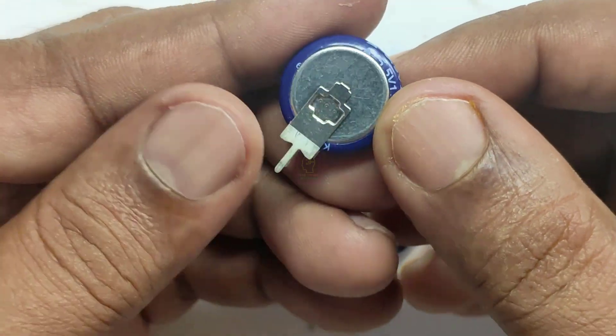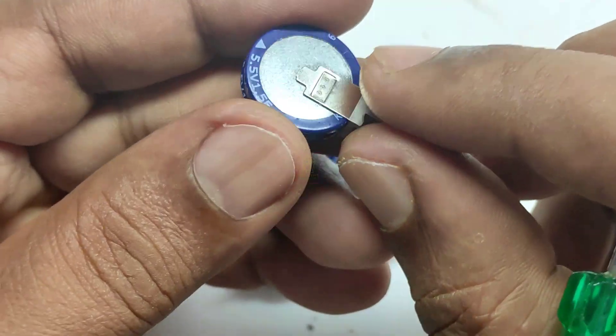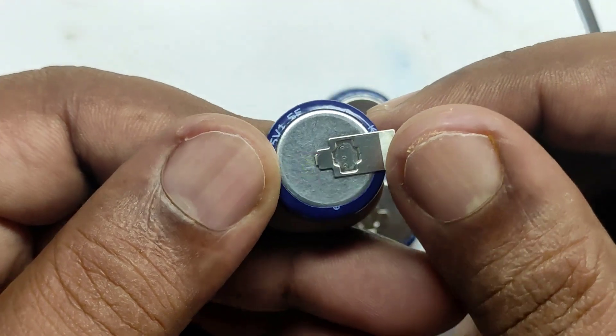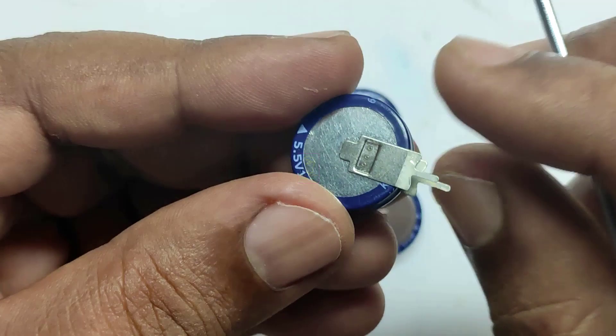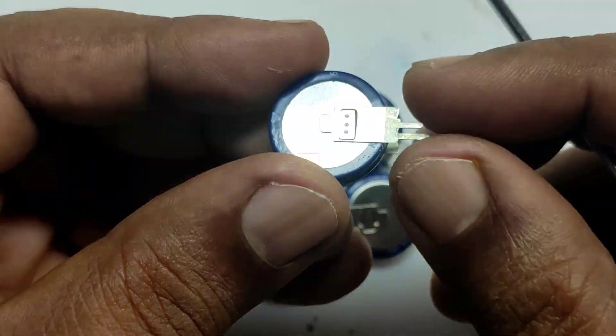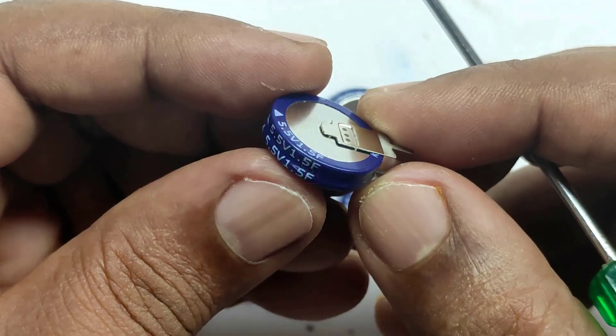Super capacitors are also available similar to radial capacitors. Radial capacitor means both leads are on one side, similar to our normal capacitor. Super capacitors are polarized capacitors, which means they have polarity.